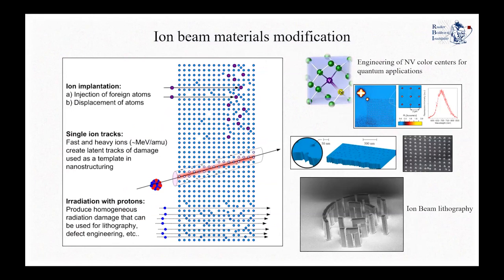When we are interested in modifying materials, one can use ion beams either to implant — to inject foreign atoms inside a crystal or target — or to displace atoms. This is used in engineering of nitrogen-vacancy color centers, which are used for quantum applications. One can also make single ion tracks using fast heavy ions with energies of MeV per nucleon, creating latent tracks of damage for nanostructuring applications.